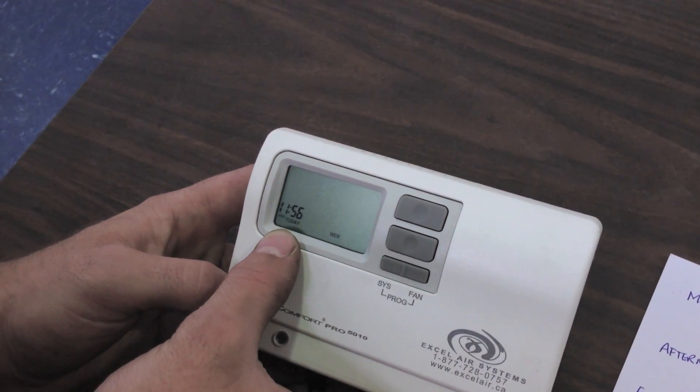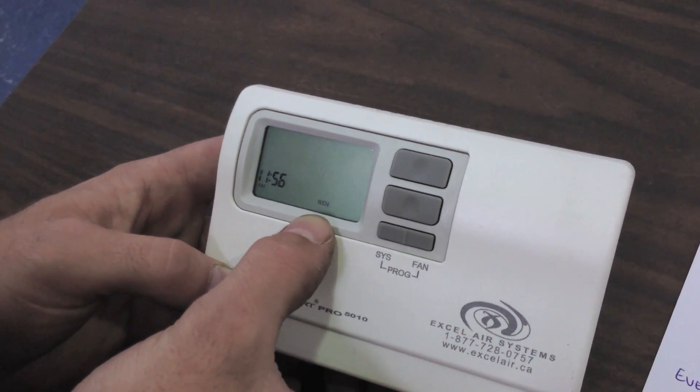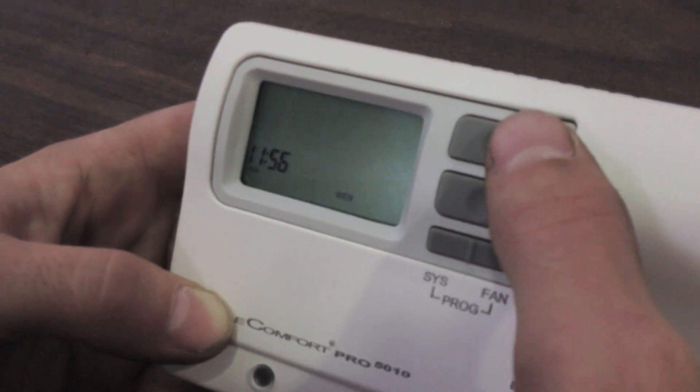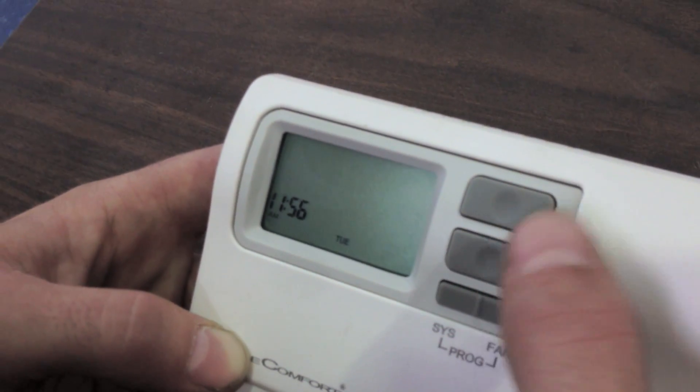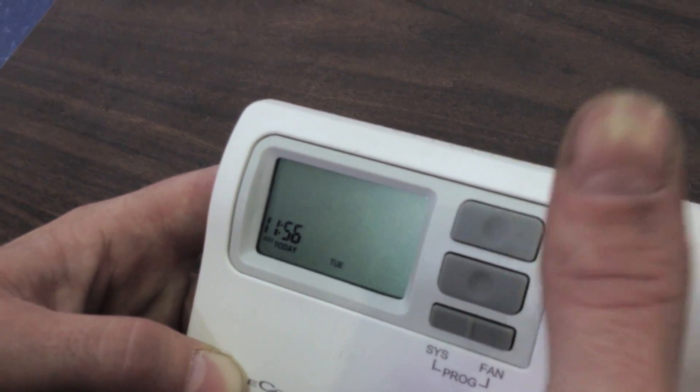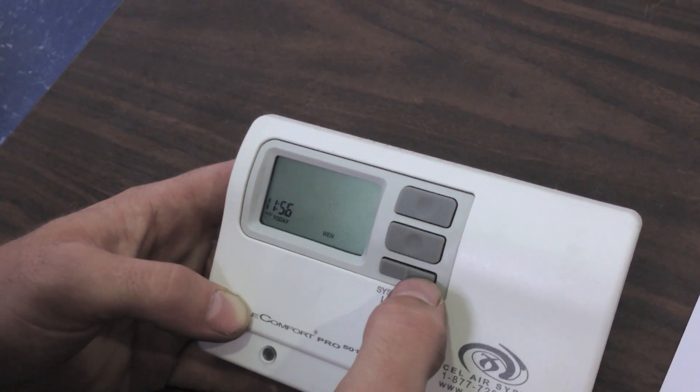And it's going to display the word today, meaning what day of the week it is. So right now it's Wednesday and it's highlighted as Wednesday. We can change it by going up to Thursday or back to Tuesday. Today is Wednesday. We'll leave it at Wednesday. We're going to push our fan button when we're happy with the day of our week.